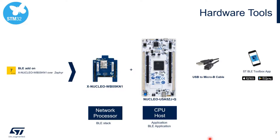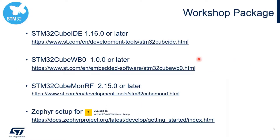We'll also show you the XNucleo WB05, our network coprocessor used in combination with the Nucleo WB05. With these two boards, we'll cover hands-on number 7: BLE add-on over Zephyr. On top of the hardware, we will use different software packages — all the different software tools that will be used during these sessions are listed here.